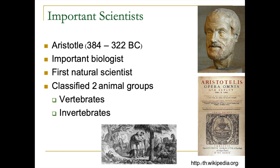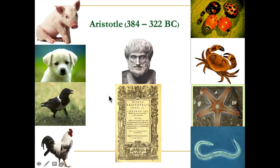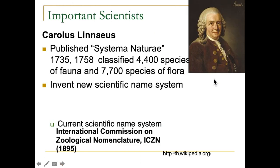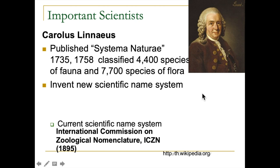But Aristotle's system was not enough — at that time we only separated vertebrates and invertebrates into two groups. Then Linnaeus became the second scientist to establish a classification system. His system was very famous and is still acceptable today. Linnaeus published the book Systema Naturae, which included many species of both plants and animals, and it became the foundational guideline for taxonomy.